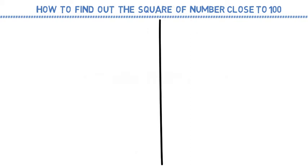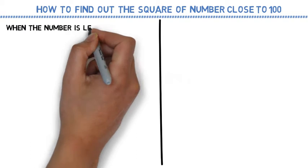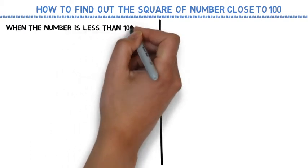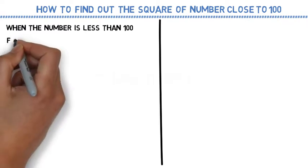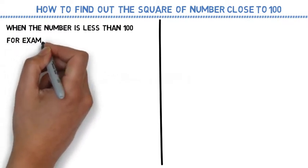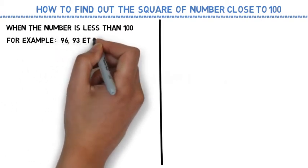When we are talking about the number close to 100, we can have two different cases. One is the number can be less than 100, or another is the number is greater than 100. Let's have a look at the case first. When the number is less than 100, we can take many examples like 96, 93, etc.